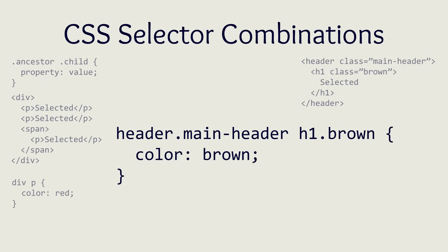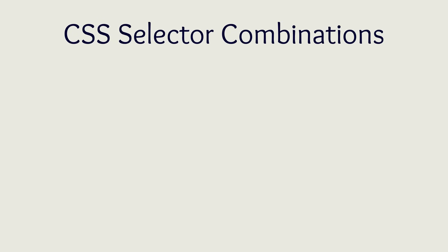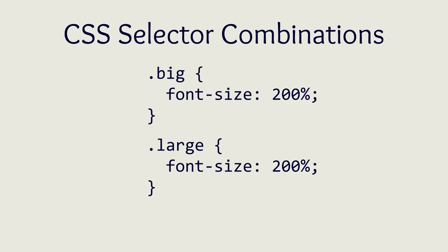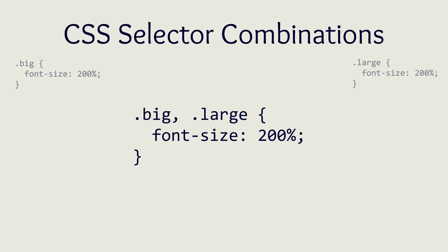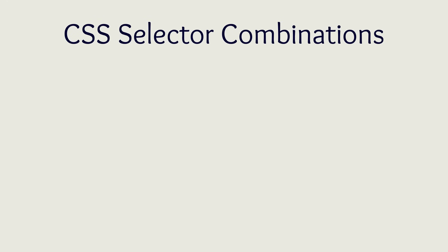The last common combination of selectors is when you want to share a set of style properties and values between multiple selectors. If you have a class big and another class large that both have the same style properties and values, you can combine these selectors into one by using a comma between them, which allows you to avoid duplication. There is also the everything selector, defined as the asterisk symbol, which is used to select every element on the entire webpage and is only really used to set some defaults such as font family.